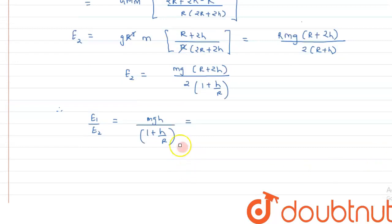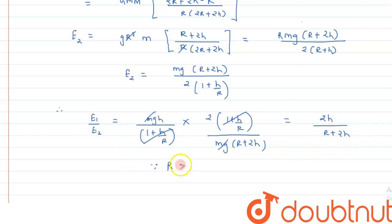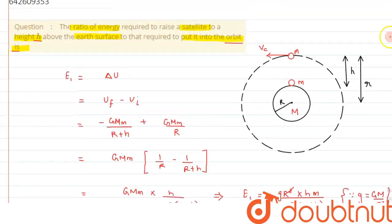Taking the ratio E1/E2: E1 = mgh/(1+h/R) divided by E2 = mg(R+2h)/[2(1+h/R)]. The mg terms cancel, and the (1+h/R) terms cancel, leaving E1/E2 = 2h/(R+2h). Since R is much greater than h, R+2h ≈ R. Therefore, E1/E2 = 2h/R. This is the final answer.